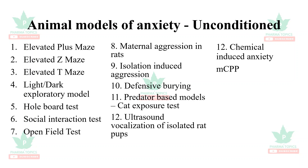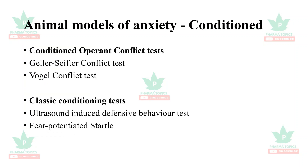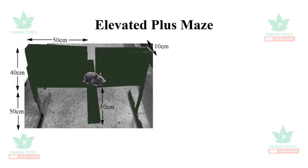Further unconditioned models include maternal aggression in rats, isolation-induced aggression, defensive burying, predator-based models such as cat exposure test, ultrasound vocalization of isolated rat pups, and chemical methods including usage of mCPP. Conditioned animal models of anxiety include conditioned operant conflict tests such as the Geller-Seifter conflict test, Vogel conflict test, and classical conditioning tests involving ultrasound-induced defensive behavior and fear-potentiated startle reflexes.